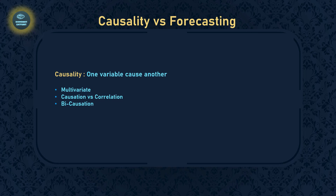There is also the concept of bi-causation, where variable X causes variable Y but variable Y also causes variable X. For example, when crime rate increases, the number of policemen hired in a city may also increase, and vice versa. But one could also argue that more policemen involved in corruption leads to higher crime rates. So causation can run in both directions — this is called bi-causation.